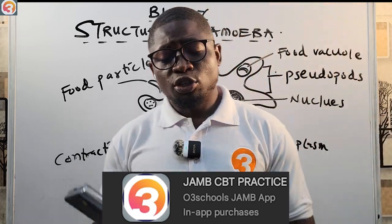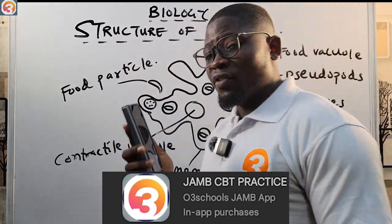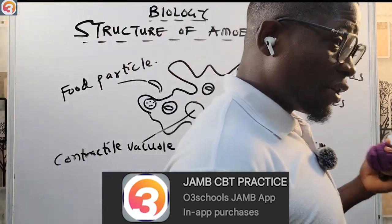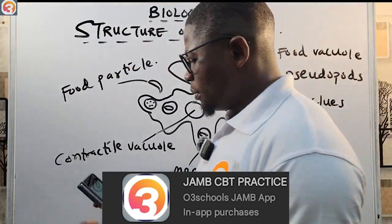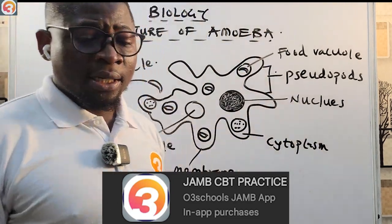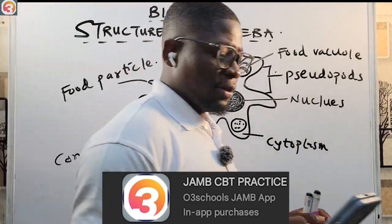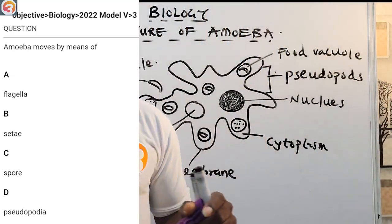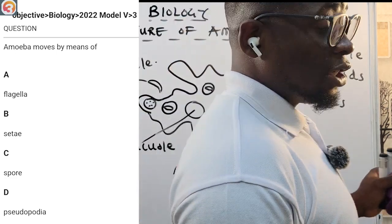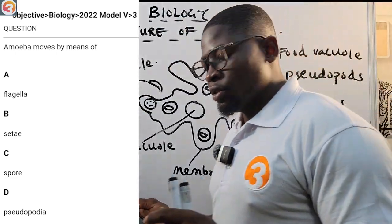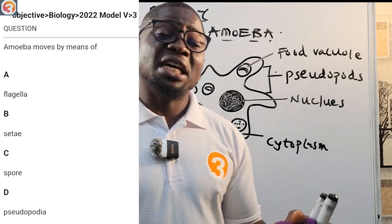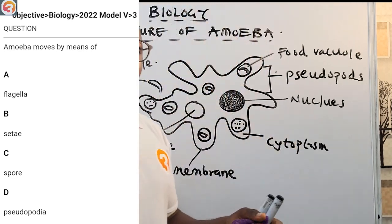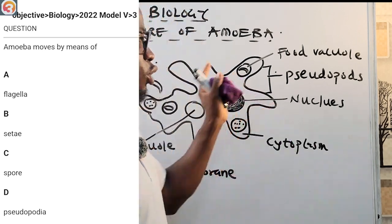Now, before we go into the structure of amoeba, let's look at a question from the app to show you that these are real exam questions. This is a 2022 question number three: 'Amoeba moves by means of what? A) flagella, B) seta, C) spore, D) pseudopodia.' We'll come back to this question at the end of class.